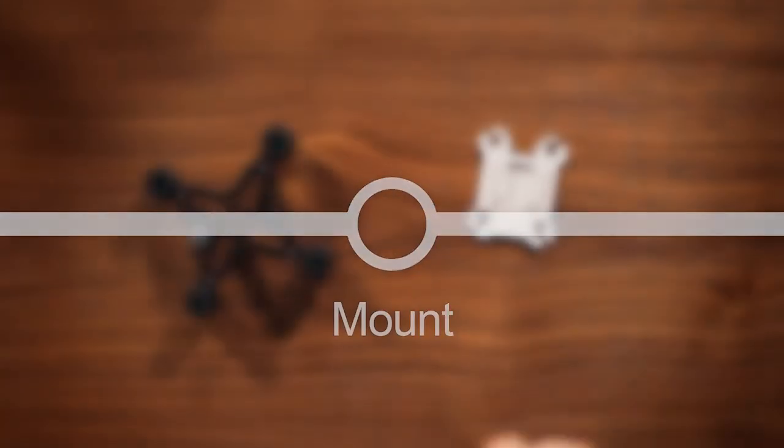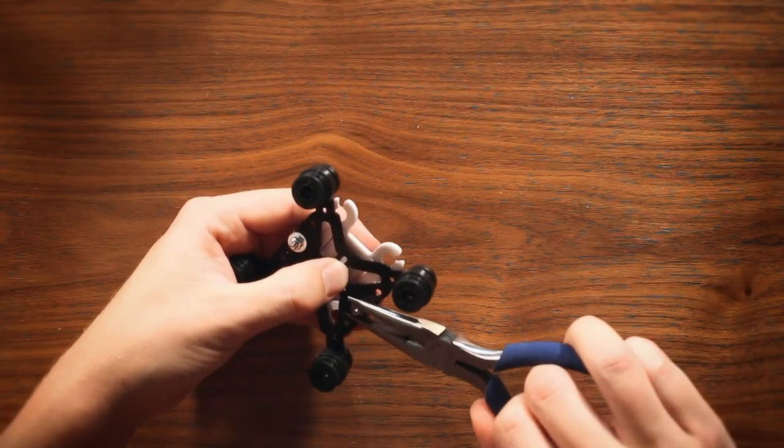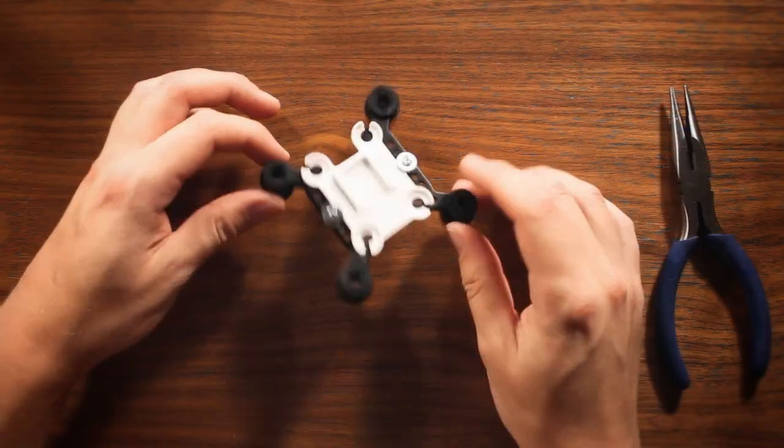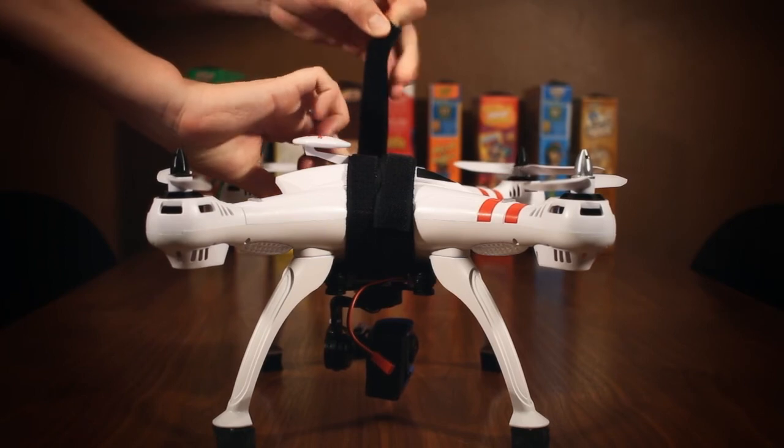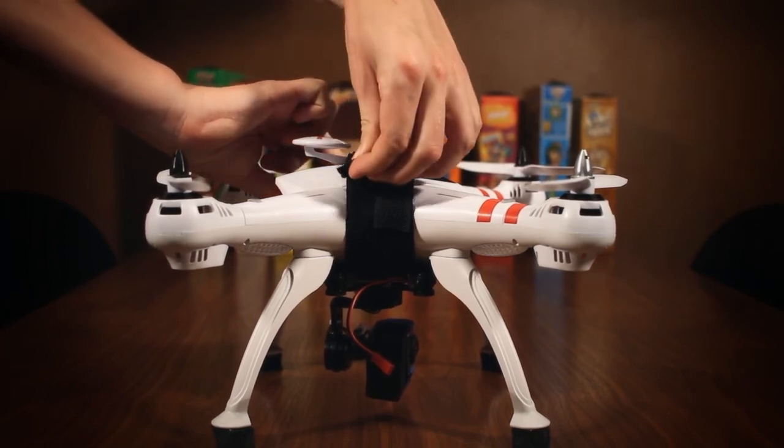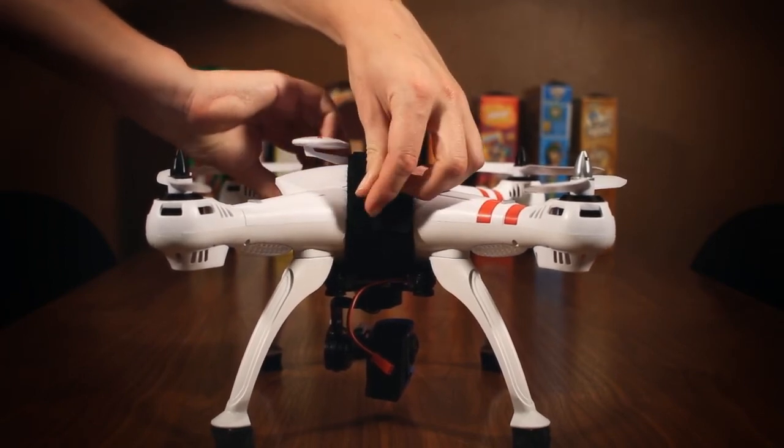As for how to mount the gimbal, I initially tried to attach the base plate of the gimbal to the shoe mount of the quadcopter's originally-included camera mount, but that didn't really pan out, so instead I resorted to the less elegant solution of just using a pair of velcro tie-down straps.